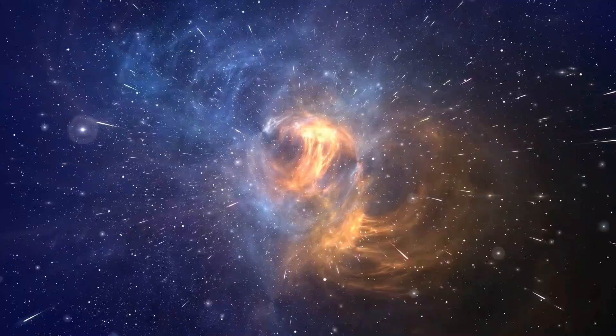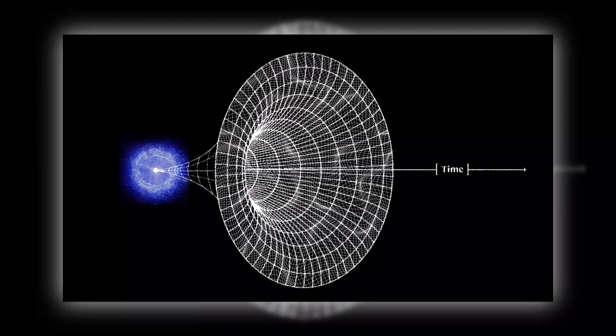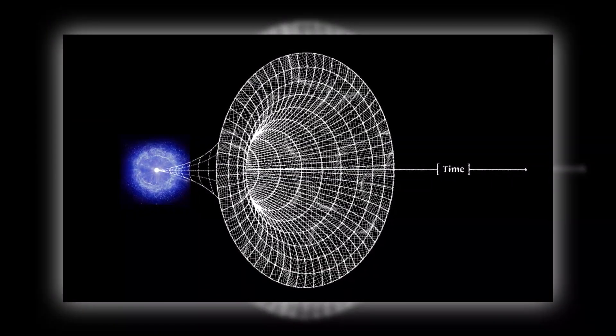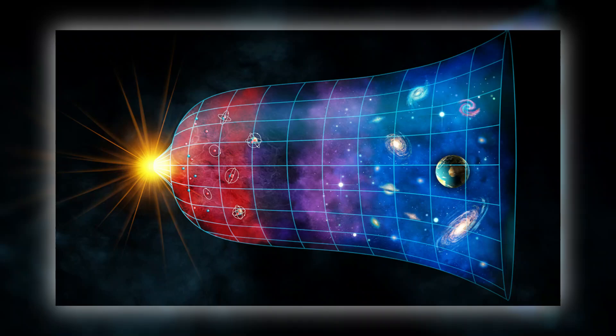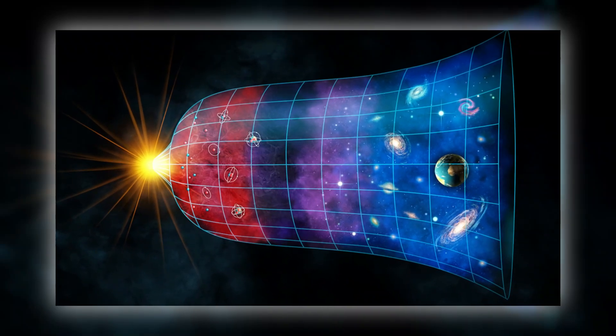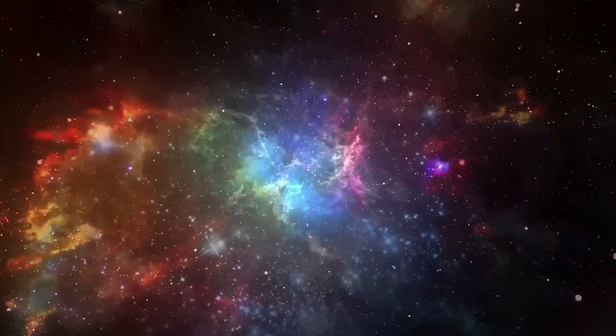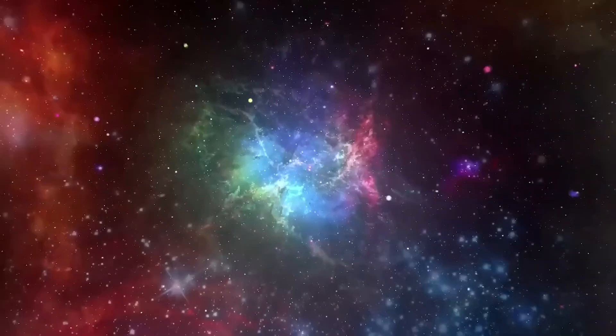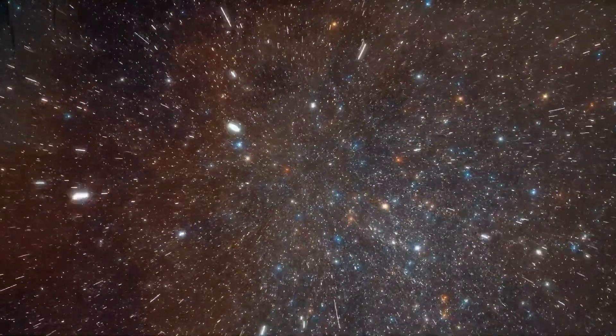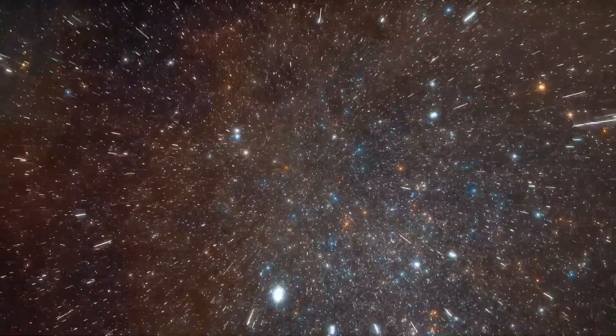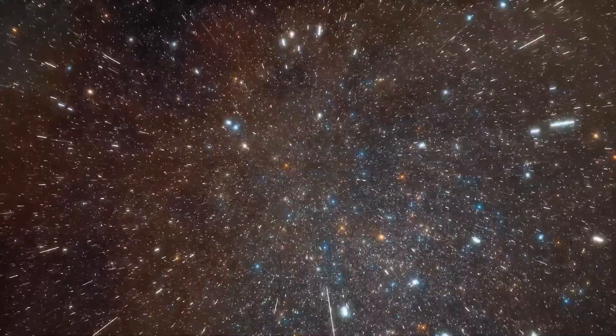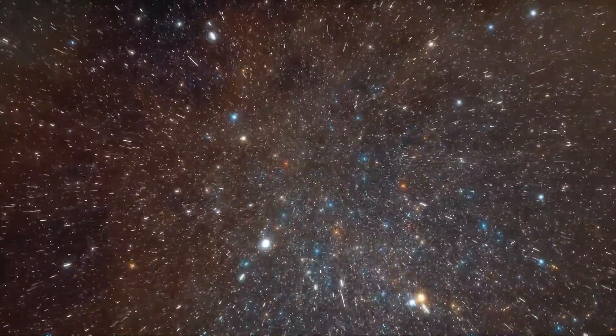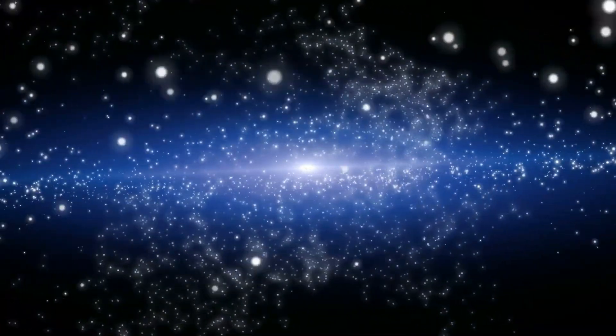This shows that inflation doesn't always give a clear answer to the question of where everything came from, even though it does explain a lot about the early universe. It's hard for other models, like circular or bouncing cosmologies, to explain where the universe came from in the first place. These models say that the world goes through cycles of getting bigger and smaller, but they can't get around the problem of a beginning.